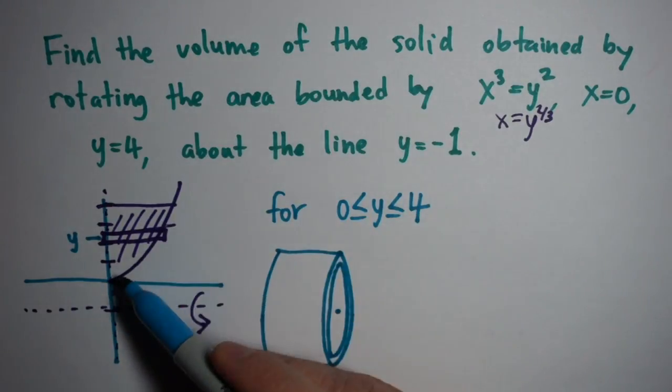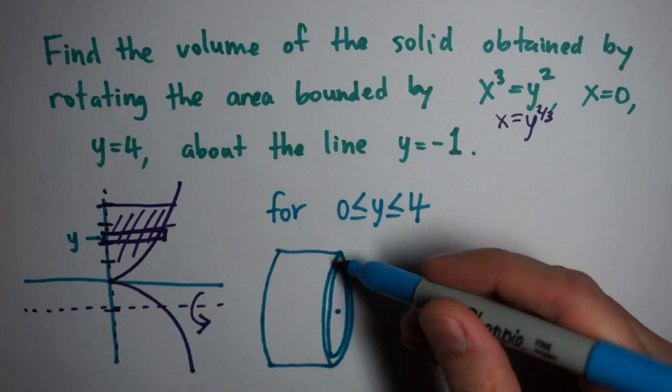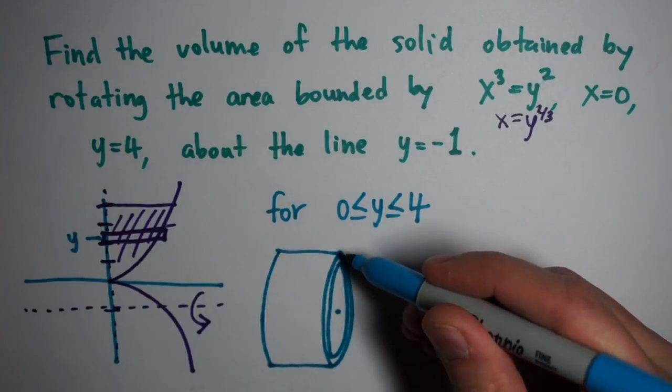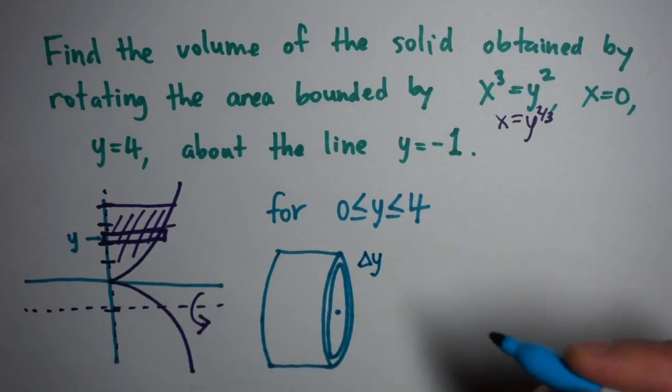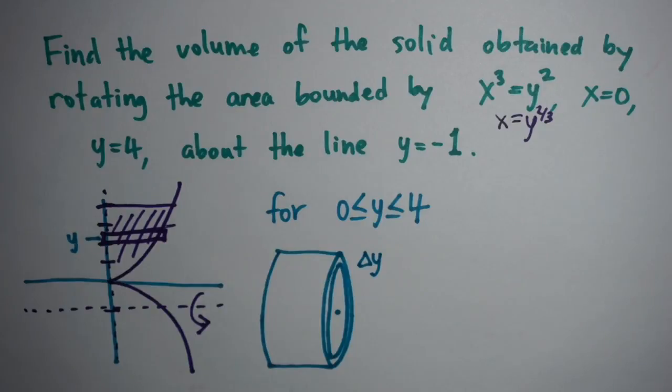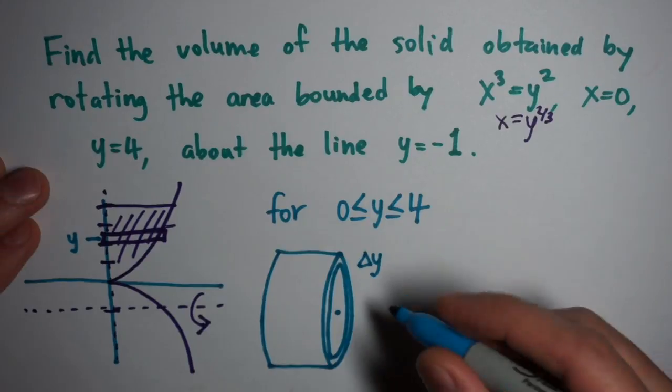The different dimensions involved here will come from the function and from the fact that we're working with y numbers, so the element is going to be in terms of Δy. That will be the thickness of our shell. The width of the shell and the radius of the shell are the other two dimensions we'll need.